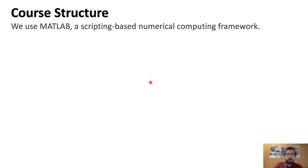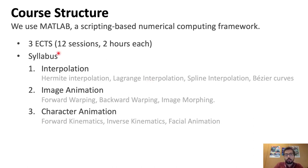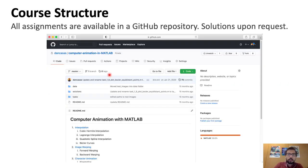So the course is structured for a 3 credit course which is split in 12 sessions of 2 hours each. And the syllabus or the content of the course is split into 3 topics: interpolation, image animation and character animation. So in the following of my talk I'm going to give you some examples of the tasks that we propose and why they are easy to address with minimal programming skills. The course is available in a github repository and the solutions are going to be available upon request by the teacher or instructor.